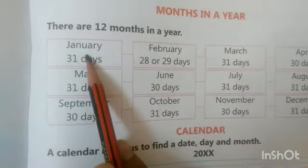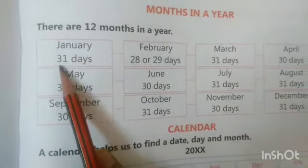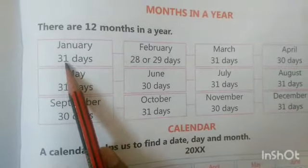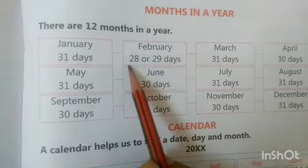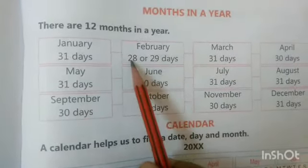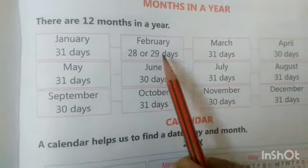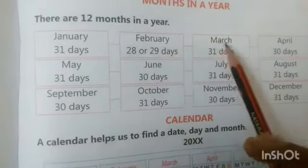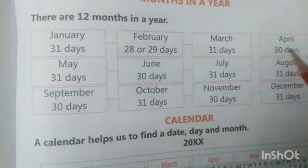The first month is January. It has 31 days. February has 28 or 29 days — 28 days in an ordinary year and 29 days in a leap year. March has 31 days.